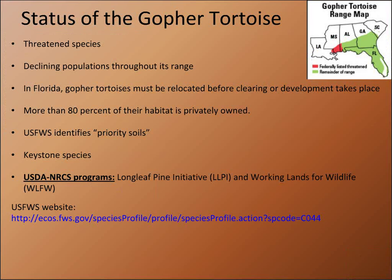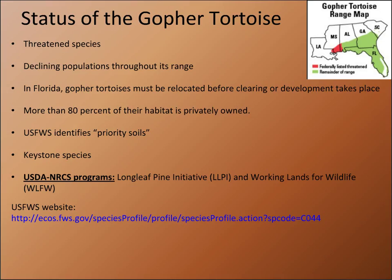On this next slide, you're looking at the status of the Gopher Tortoise. If you look at the map in the upper right-hand corner, that's showing the current range of the Gopher Tortoise. The red area is the western range and it's listed as threatened there. It's split off at the Mobile and Tombigbee rivers. The rest of the area in green is where the species is now a candidate for listing — potentially as a threatened species somewhere around 2020. Tortoise populations have been declining throughout its range and are still declining in many areas.